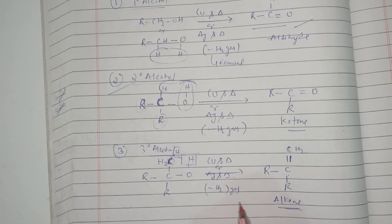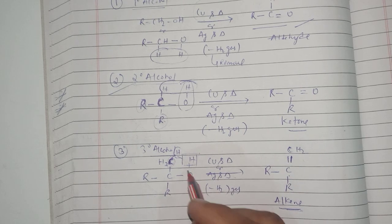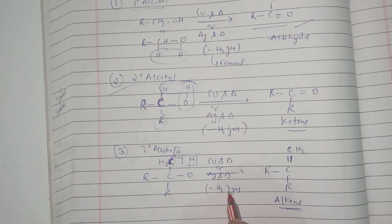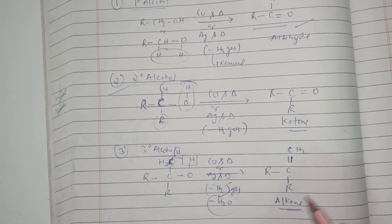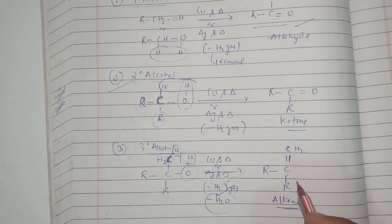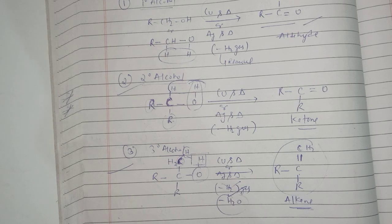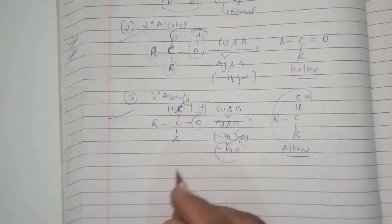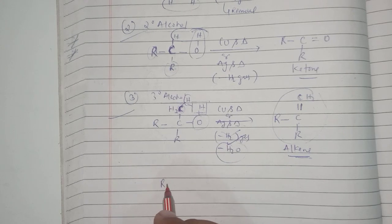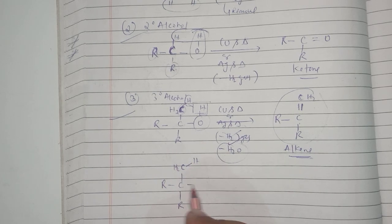It is very important to note what is actually getting removed here. It is not hydrogen gas — it is your H2O which is getting removed. So that is why the product alkene is being formed. For the three-degree alcohol, it is the water molecule which is getting removed.